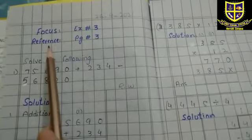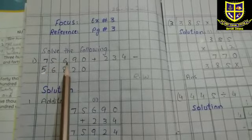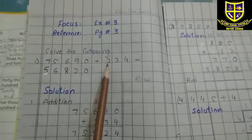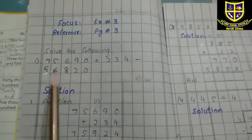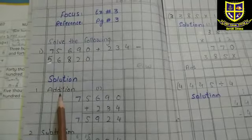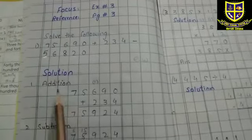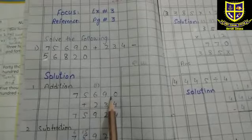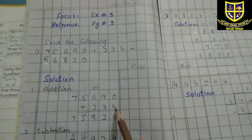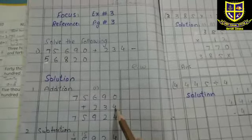Focus — Exercise Number 3, and the reference book page is 3. Question: Amara has solved the following. Okay, 75,690 plus 234 — it means we have to add these two numbers together, and then from that answer we will minus 56,820. So let's start. First, you have to write 'Solution.' Then in the first step we will do addition, and once we have that answer, we will do subtraction. Give the heading 'Addition.' Write 75,690 and below it write the second number 234 from the right side — four in the units column, three in tens, and two in the hundreds column.